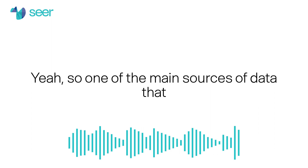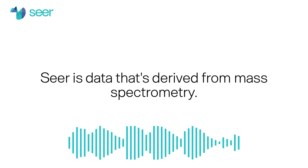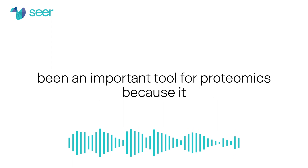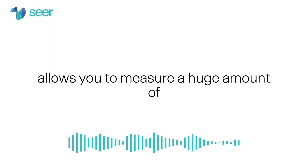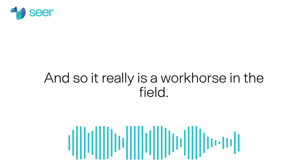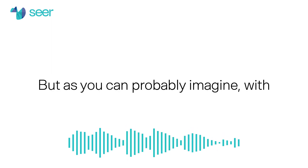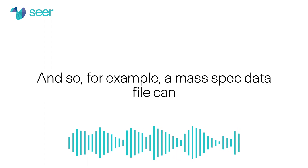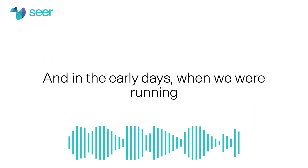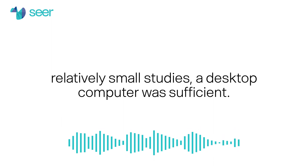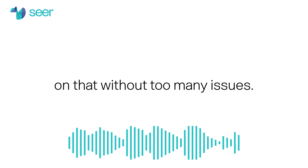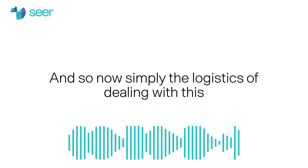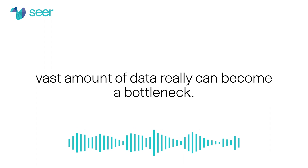One of the main sources of data that we work on extensively at SEER is data derived from mass spectrometry. Historically in proteomics, mass spectrometry has really been an important tool because it allows you to measure a huge amount of information in a single experimental run — it really is a workhorse in the field. But with this vast amount of information comes lots of complexity and challenges. A mass spectrometry file can be really large — several gigabytes a piece or more. In the early days, running relatively small studies, a desktop computer was sufficient. But now we're asking deeper biological questions and running larger studies, so the logistics of dealing with this vast amount of data really can become a bottleneck.